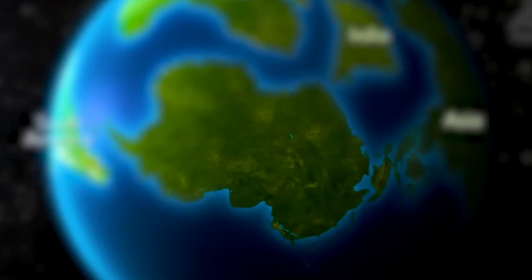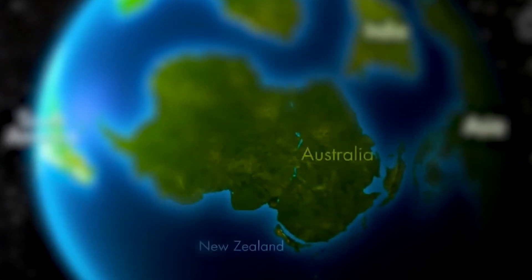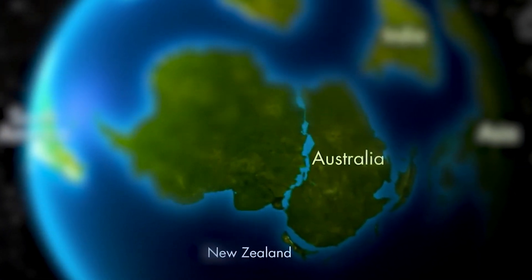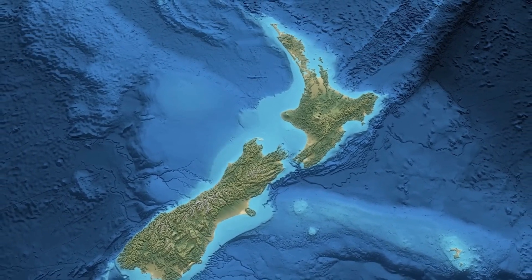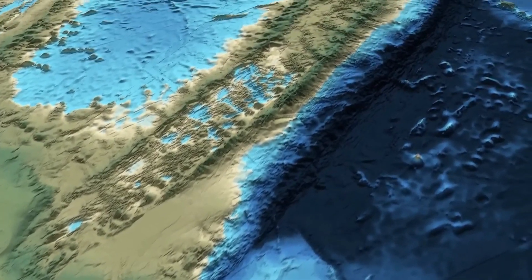The tectonic plates of the Pacific and Australia collide, separating them both along a horizontal axis. Previously continuous ribbons of granite no longer line up and are now almost at right angles.